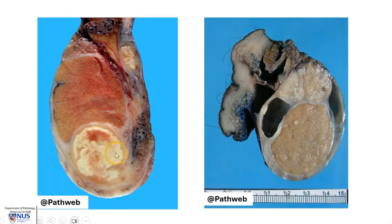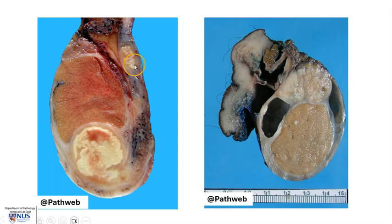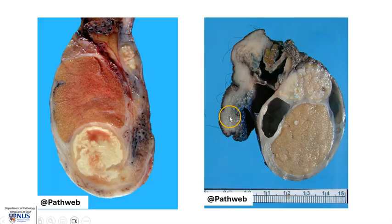Here is a closer view of the epididymis where we can see this large area of caseous necrosis. We can also see another area here where the necrotic material is visible as this pale yellowish appearing cut surface. Here is a different example: we have the cut surface of the testis, and the involved epididymis again with these pale areas of necrosis. This is the skin of the scrotum, which is not involved.